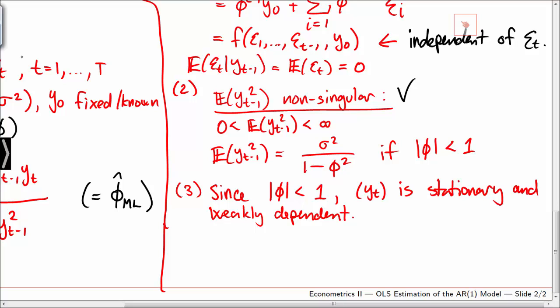So we conclude that whenever phi has absolute value less than 1, the OLS estimator for phi is consistent.